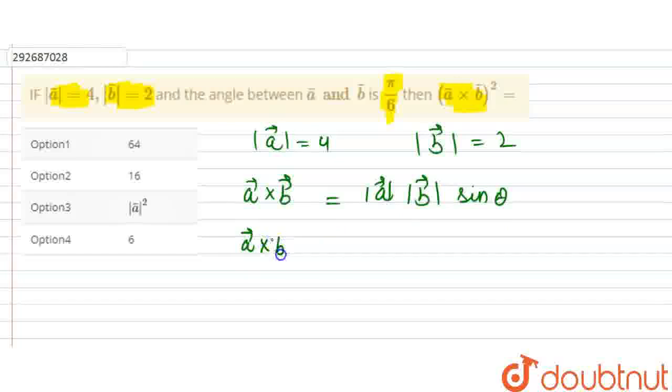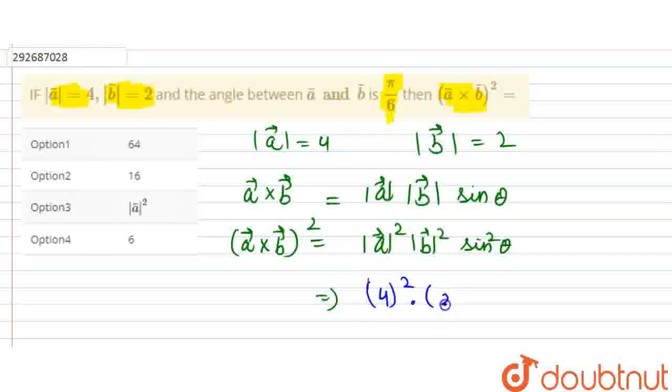So, (a⃗ × b⃗)² equals |a⃗|² times |b⃗|² times sin² θ. Now simply put the values in. |a⃗| is 4, so this is 4² times b is 2, so 2² times sin θ. And θ is π/6, so sin² π/6.